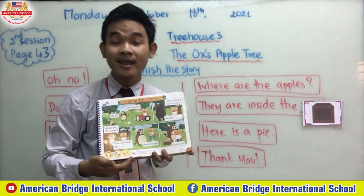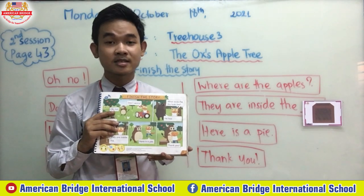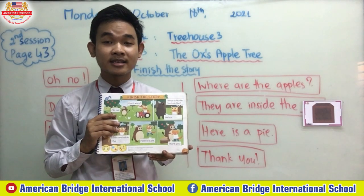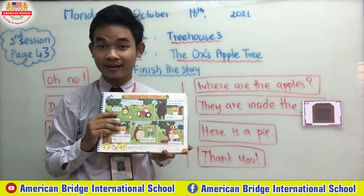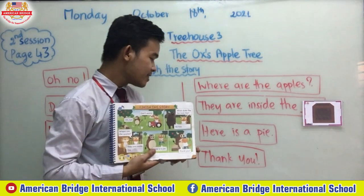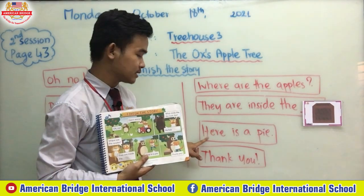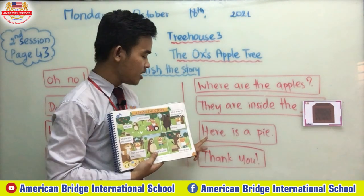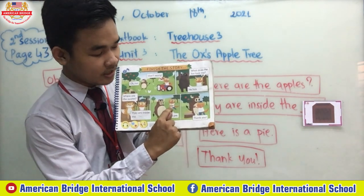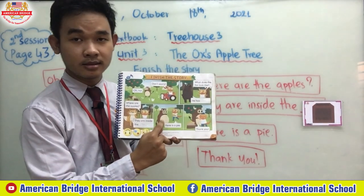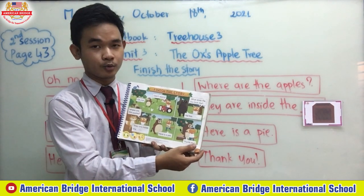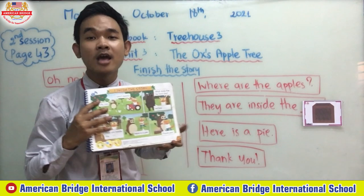After Monty found the stolen apples, he made a pie and gave it to the ox. You can see him holding a pie and giving it to the ox — 'Here is a pie.' And then they are happy. The ox said 'Thank you!'